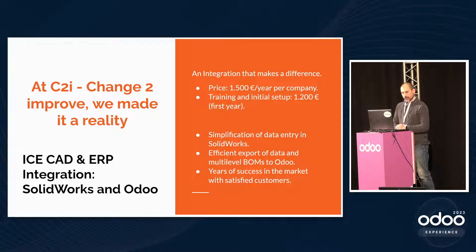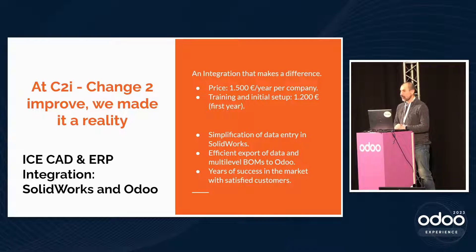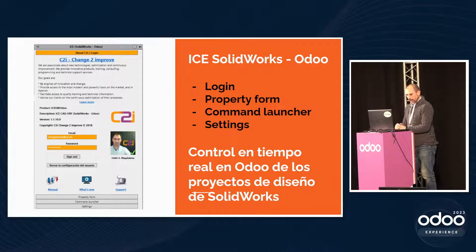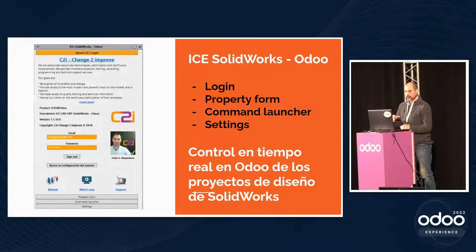We figured that out a few years ago and started a project to integrate two main platforms: Odoo as the ERP system and SOLIDWORKS as the CAD system. That has been working for several years. The price is $1,500 per year per company, not per user. There are costs in the first year for implementation, initial setup, and training, but just in the first year. There is a tool inside SOLIDWORKS — inside the CAD system — to connect to Odoo and export the information to Odoo.